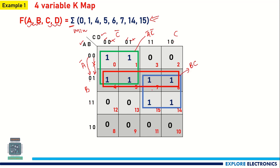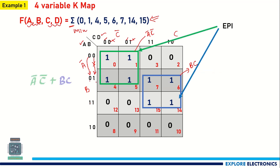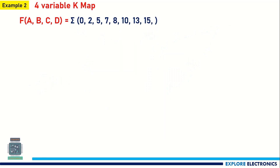We can neglect the additional group; even if we form it, we get A-bar·B, which is only a prime implicant. So the final expression is A-bar·C-bar + B·C. Let us take one more example.